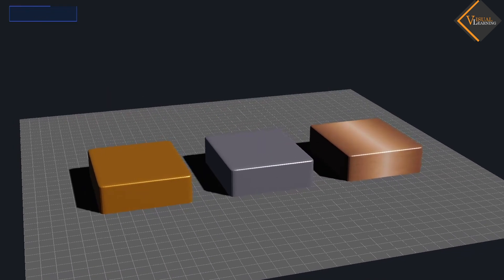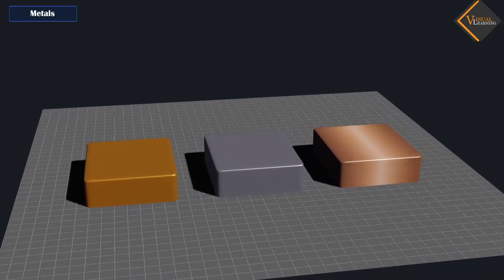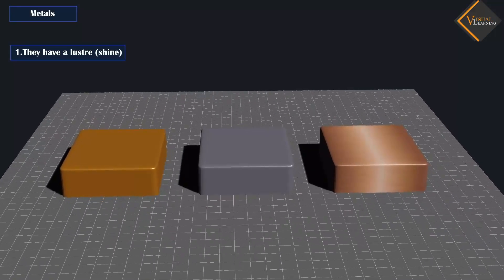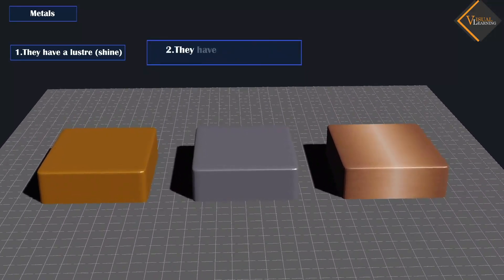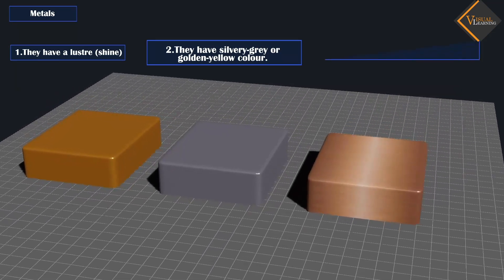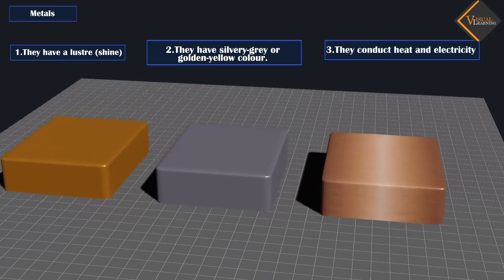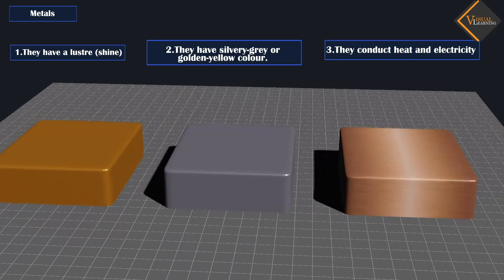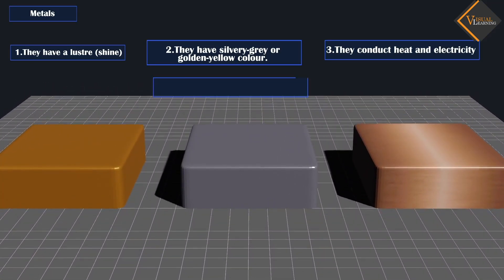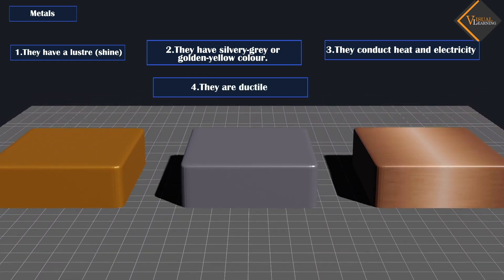Metals usually show some of the following properties. They have a luster. They have silvery-gray or golden-yellow color. They conduct heat and electricity. They are ductile. Examples of metals are gold, silver, and copper.